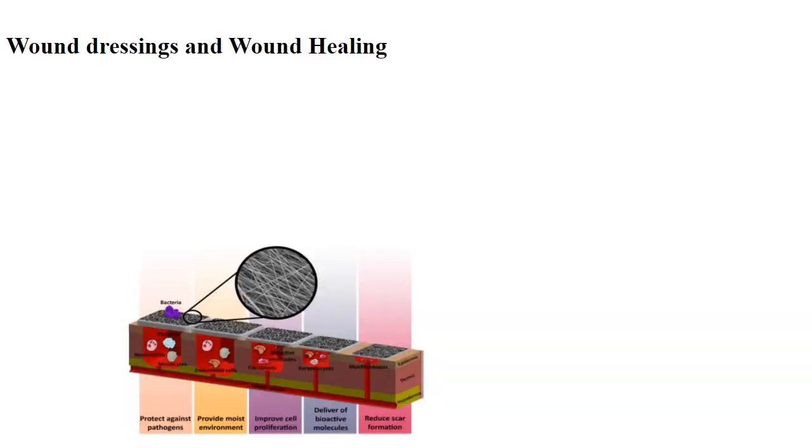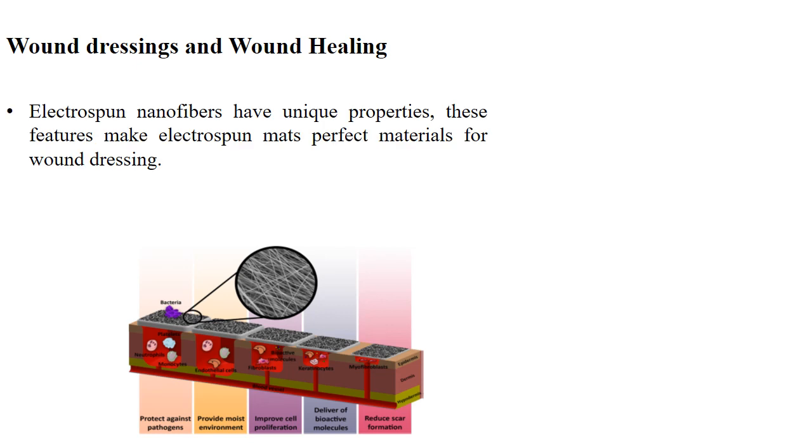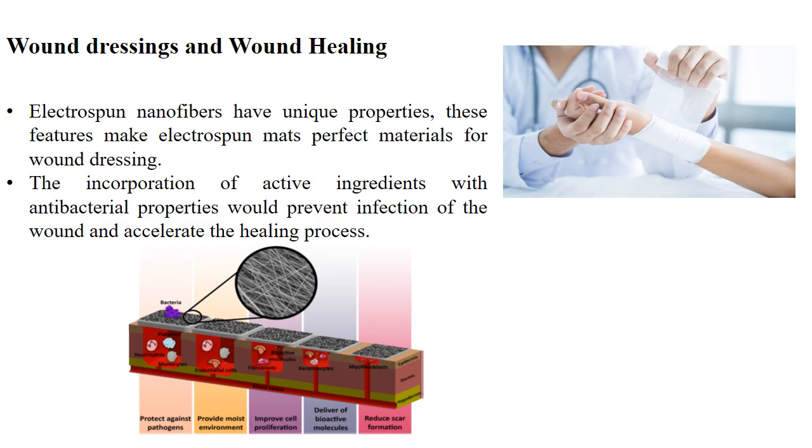First one is dressing and wound healing. So in that normally this nanofibers we can make as a mat and this mat we can use as a preferred material for wound dressing application. And if we can able to incorporate some antibacterial agent in the electrospun material and we can also prevent the infection of the wound and which will accelerate the healing processes.